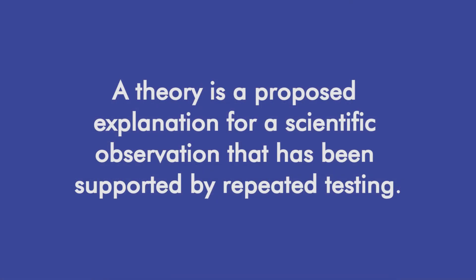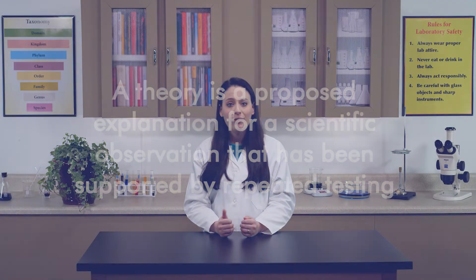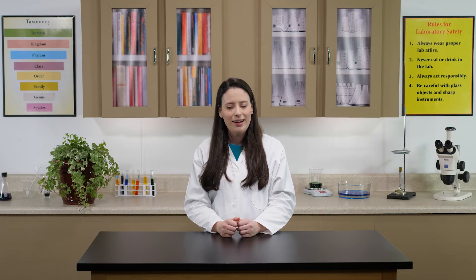In a research situation, we would repeat the experiment many times to confirm the hypothesis. Then we would propose a theory to explain the results. A theory is a proposed explanation for a scientific observation that has been supported by repeated testing. If an experiment does not confirm the hypothesis, the researcher should begin again with a new hypothesis and conduct additional tests. This process would be repeated until a hypothesis was confirmed.